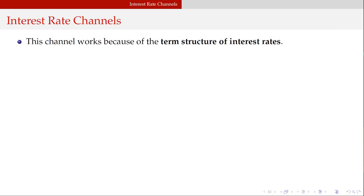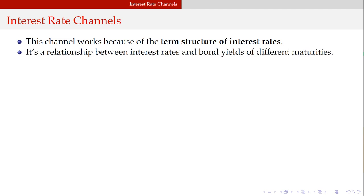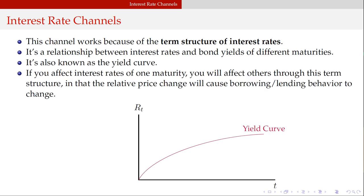Interest rate channels work through what's known as a term structure of interest rates — the relationship between interest rates and bond yields of different maturities, also known as the yield curve. If you affect the interest rate of one maturity, you're going to affect the others through the term structure, and that relative price change will alter borrowing and lending behavior.